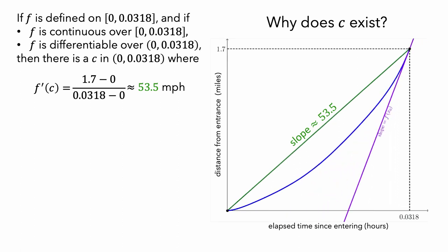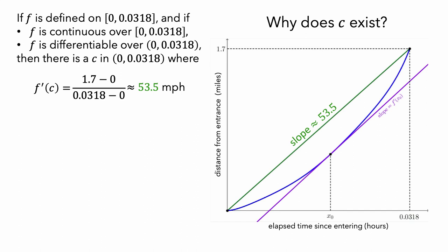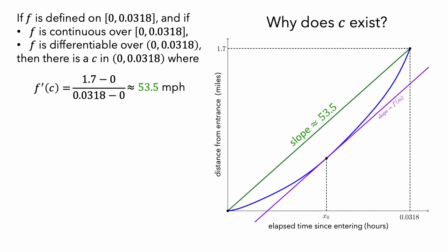You probably noticed that at first the slope of the purple tangent line was less than the slope of the green secant line, so that would mean initially the blue car was traveling slower than 53.5 miles per hour. Then, in order to travel the entire 1.7 miles in the given 0.0318 hours, at the end of the time in the tunnel, the blue car was traveling faster than 53.5 miles per hour. And sometime during the blue car's trip through the tunnel, there was some moment in time where the slope of the tangent line was equal to the slope of the secant line. This is the value of c, where the slope of the tangent line, f prime of c, is equal to the difference quotient. And this is the basic reason why c must exist.